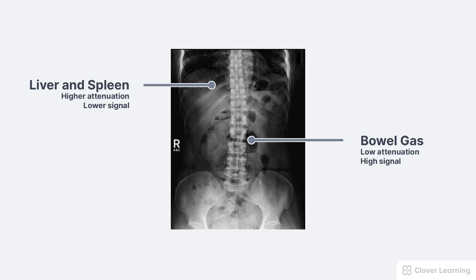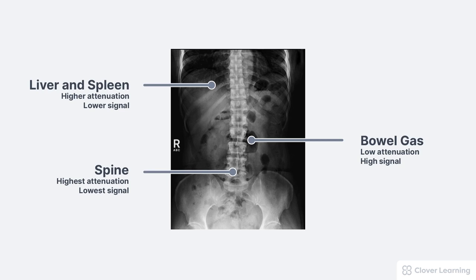Finally, high density areas like the spine attenuate the most radiation, so a much lower signal exits the patient in these areas. These differences in radiation signal intensities strike the image receptor, are measured by the computer system, and converted into different brightness levels within the radiographic image. This is how image contrast is created.